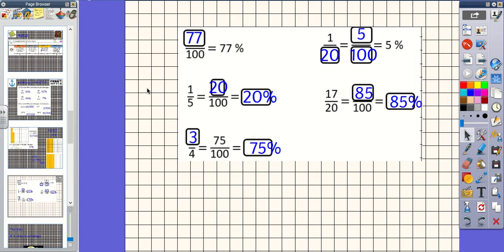Okay then, so these are the answers that you should have got. So 77 hundredths, which equals 77%. 1 fifth would be equal to 20 hundredths, which would then equal 20% because remembering that we need to have 100 as our denominator. 3 quarters equals 75 hundredths, which would equal 75%. 1 twentieth, which equals 5 hundredths, would equal 5%. So that one you'd have to work backwards to know that you've got 5 as your numerator because that is your percentage. And then 17 twentieths would equal 85 hundredths, which equals 85%.